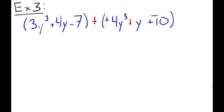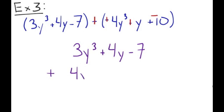So we're going to write down our first polynomial: 3y cubed plus 4y minus 7. And then our second one is going to be plus 4y cubed plus y minus 10.